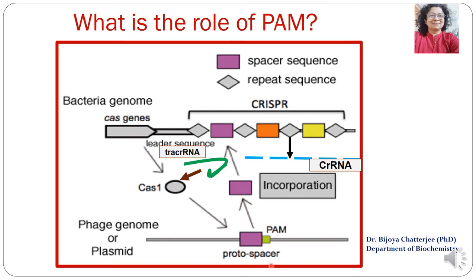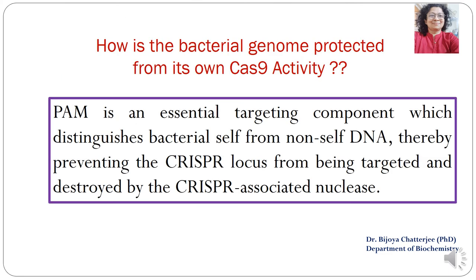The PAM helps the Cas endonuclease enzyme to cleave, and this PAM is located in the viral genome. It is not present in the bacterial genome.